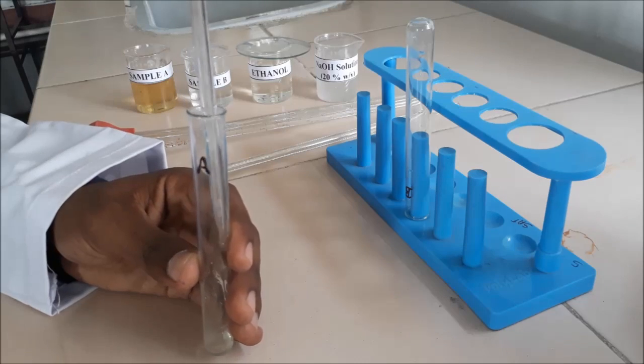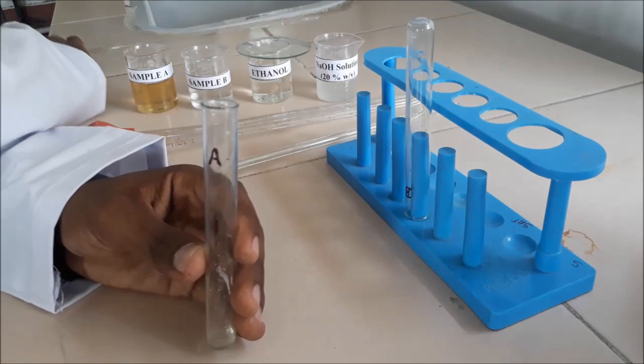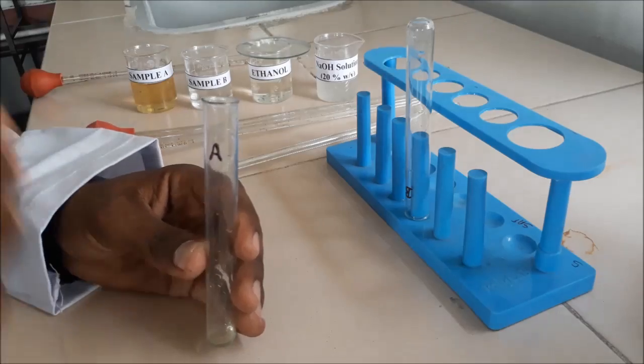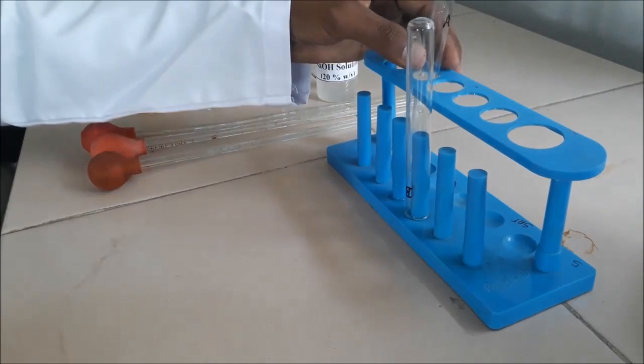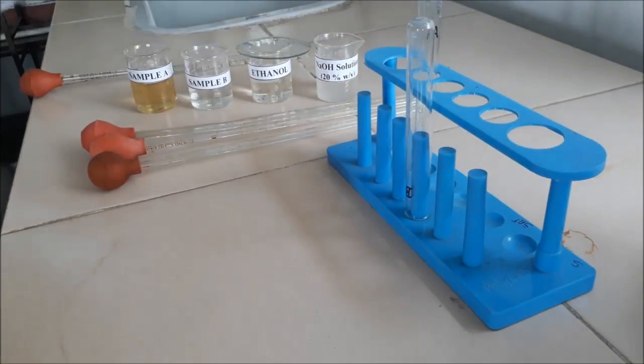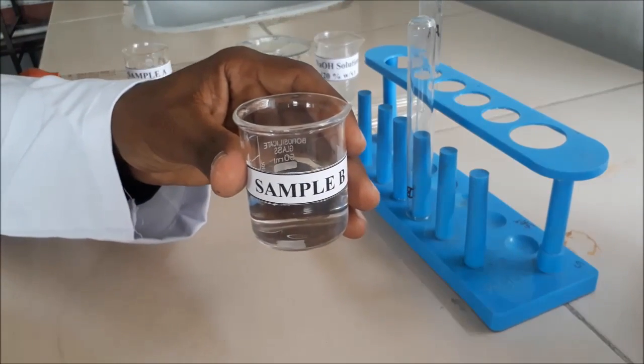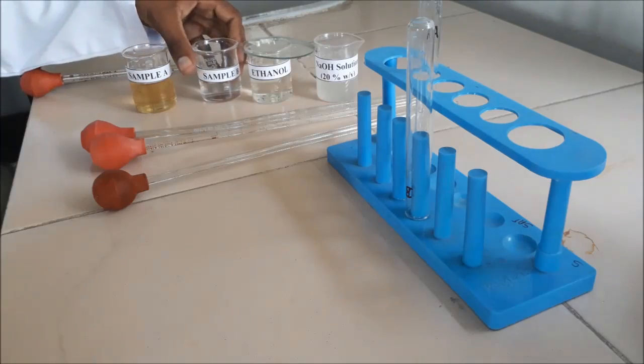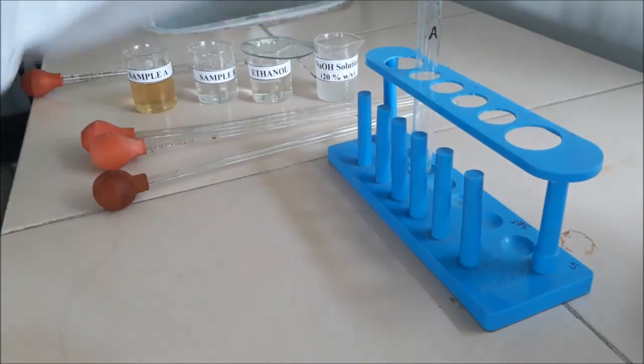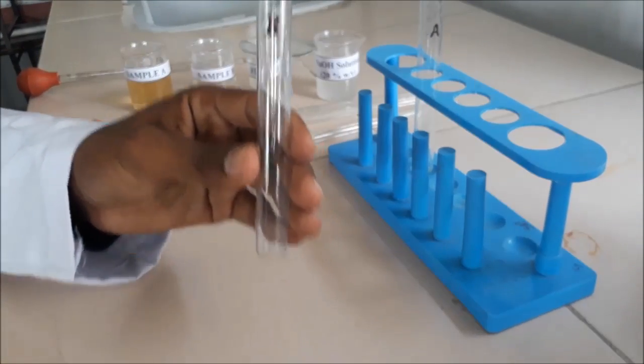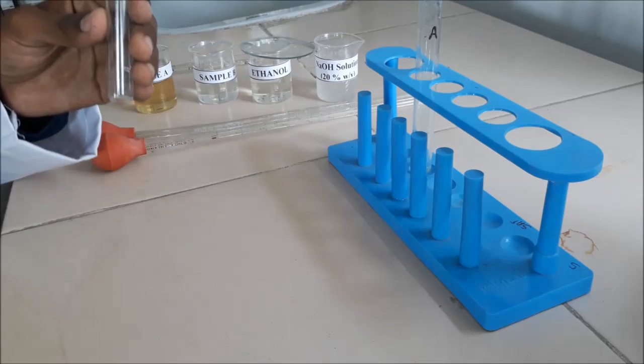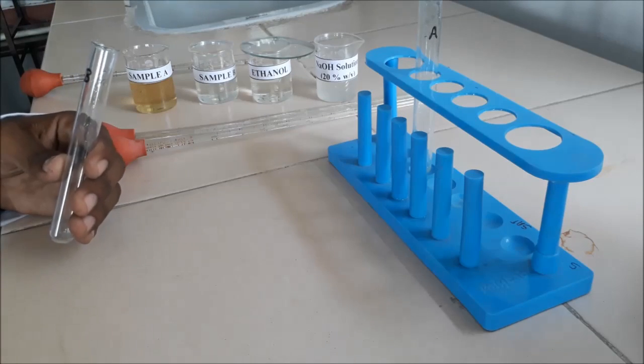When the sample is in the solid form then measure 0.5 gram of it. Take another sample that is sample B and again measure 0.5 ml of it as before and transfer it into the test tube labeled B.